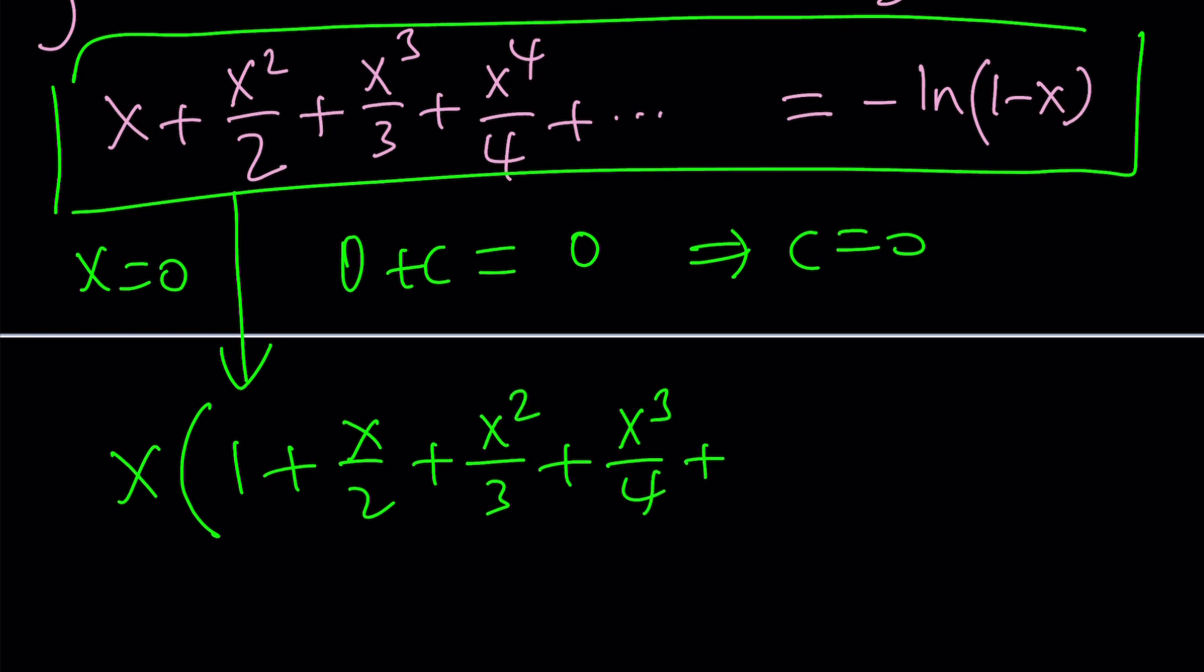Now we get the following from here. That's negative ln 1 minus x. And then, finally, we're going to divide both sides by x and we're going to get the answer. Beautiful.